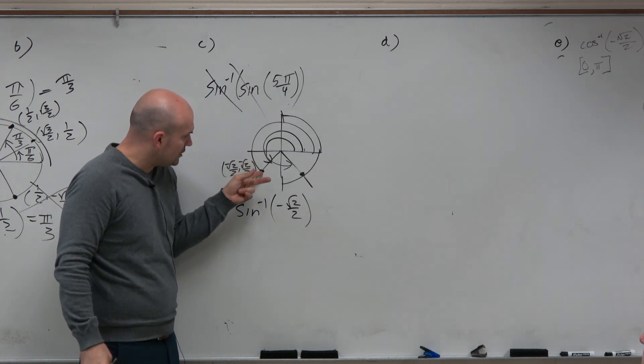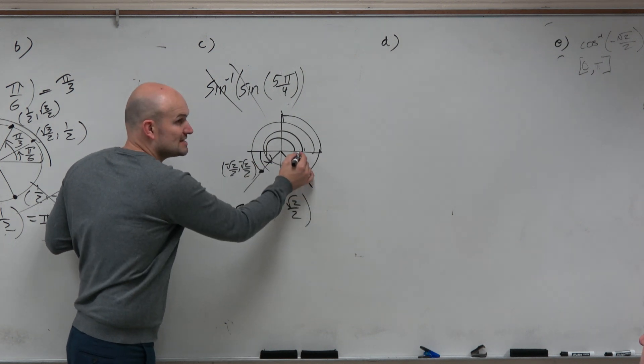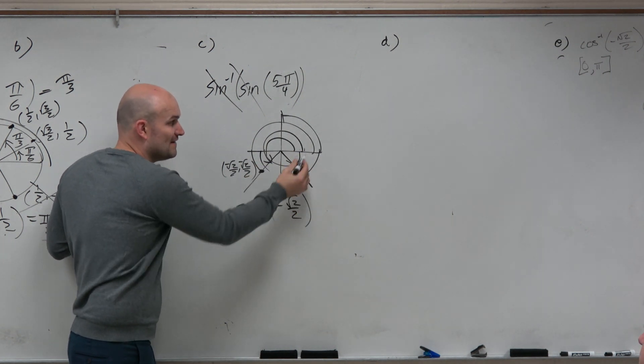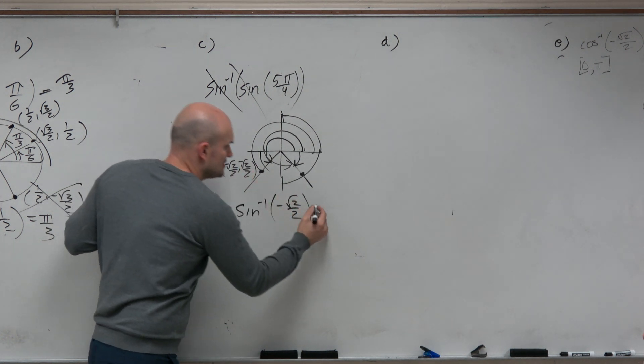well, how far is this angle away from the x-axis? The reference angle is pi over 4. That means this is going to have a reference angle of pi over 4. And if I do negative pi over 4, that's going to take me to the same angle. So that's my answer.